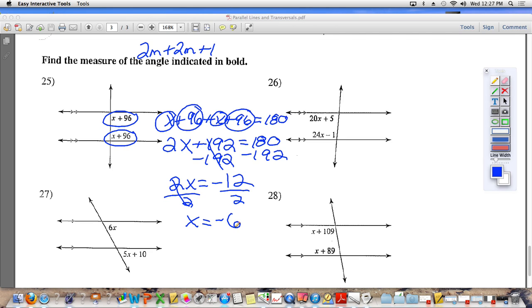But that is not the question. The question is not what is x. The question is what is the measure of the angle that's indicated in bold. So you have to look at the two angles that are marked there. Which one is marked a little darker than the other one? The top one. So we're looking for this angle up here. Well, this angle is x plus 96. What is x? Negative 6. You've got to take that negative 6 and plug it in for x. So this angle is equal to negative 6 plus 96. What is negative 6 plus 96? It is 90. So that angle is 90 degrees.